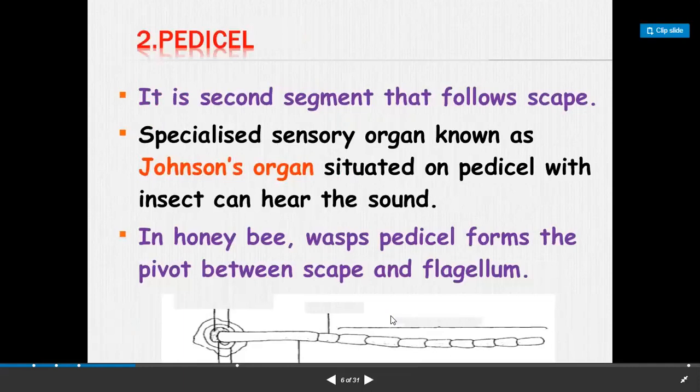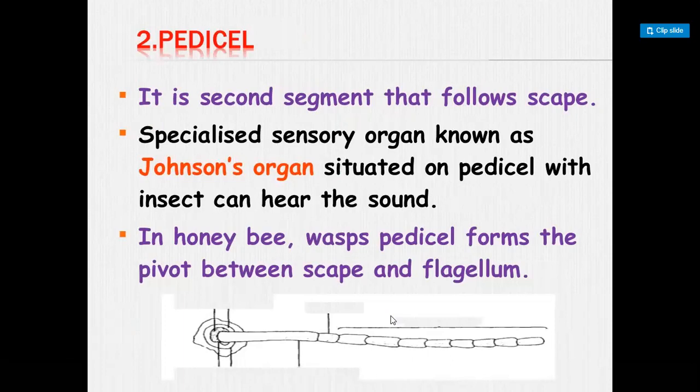The pedicel is the second segment, following the scape. A specialized sensory organ known as Johnston's organ is situated on the pedicel, with which the insect can hear sound. In honeybee and wasp, the pedicel forms the pivot between the scape and flagellum.